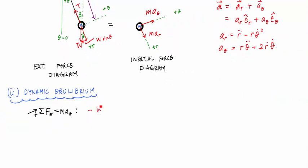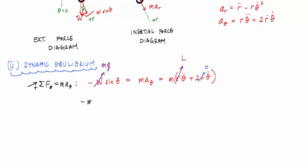I would have a negative w sine theta is equal to the transverse component of inertia m a theta, which we're going to define as m r theta double dot plus two r dot theta dot. And because my rod is not changing any length, I have no velocity in the radial direction. So this term is zero. And here this r right here is a constant length. It's a constant length L. So this is really just L.